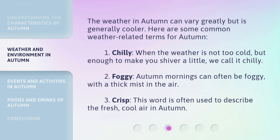The weather in autumn can vary greatly but is generally cooler. Here are some common weather-related terms for autumn. 1. Chilly: When the weather is not too cold, but enough to make you shiver a little, we call it chilly. 2. Foggy: Autumn mornings can often be foggy, with a thick mist in the air. 3. Crisp: This word is often used to describe the fresh, cool air in autumn.